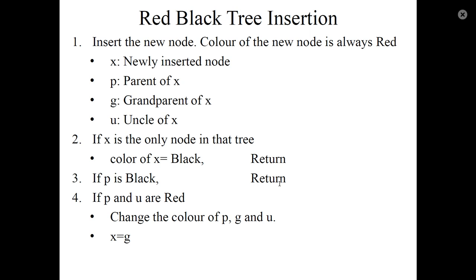If the parent is red and the uncle is also red, then X is set equal to grandparent and we recheck the properties from that point.